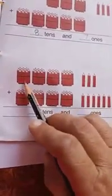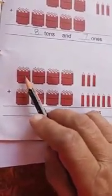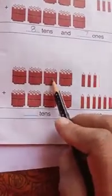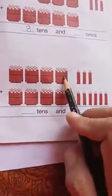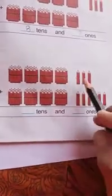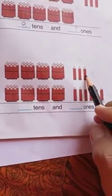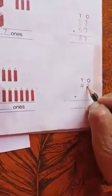Now next. How many tens are here? One, two, three, four — four tens. And ones: one, two, three — three ones. Four tens and three ones means 43.